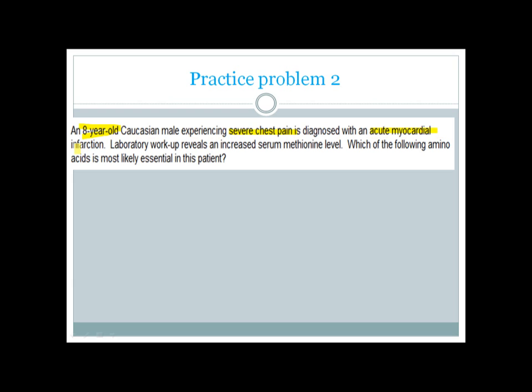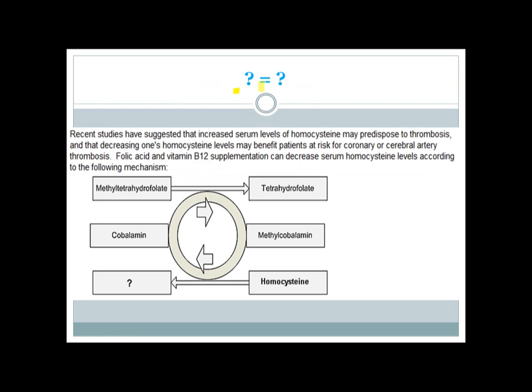Another problem: An eight-year-old male experiencing severe chest pain is diagnosed with acute myocardial infarction. Lab workup reveals increased serum methionine. Which amino acid is most likely essential in this patient? This is also a case of homocystinuria — early-onset MI with elevated methionine suggests cystathionine synthase deficiency or vitamin B6 deficiency. The most important treatment is cysteine supplementation, as cysteine can no longer be formed and becomes essential.